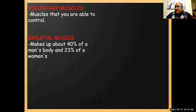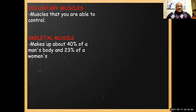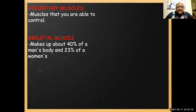Voluntary muscles — your biceps, all the muscles you can control — are often the ones that really get sore. Voluntary muscles like your biceps get sore from throwing, passing, snowboarding, whatever you do. Skeletal muscle makes up about 40 percent of a man's body and 23 percent of a woman's body.